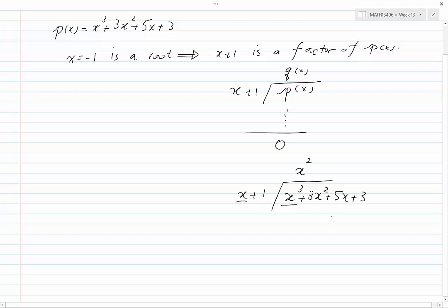x squared times x is x cubed, we write minus x cubed. x squared times 1 is x squared, we write minus x squared.